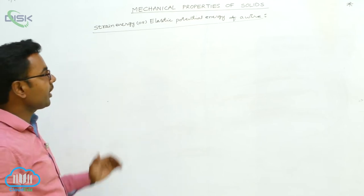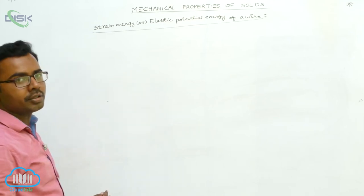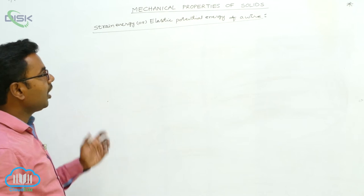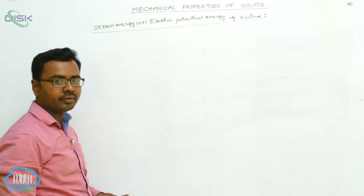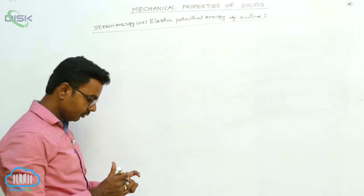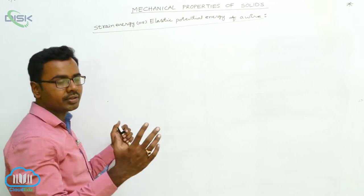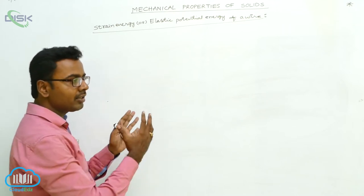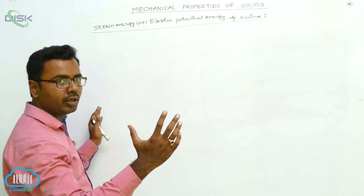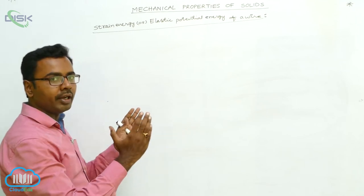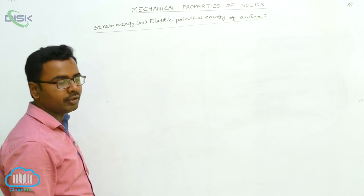Here we discuss strain energy or elastic potential energy of a wire. How does a wire gain potential energy? Whenever a wire is subjected to tensile stress, the molecules inside the wire are separated from each other against the intermolecular force of attraction.